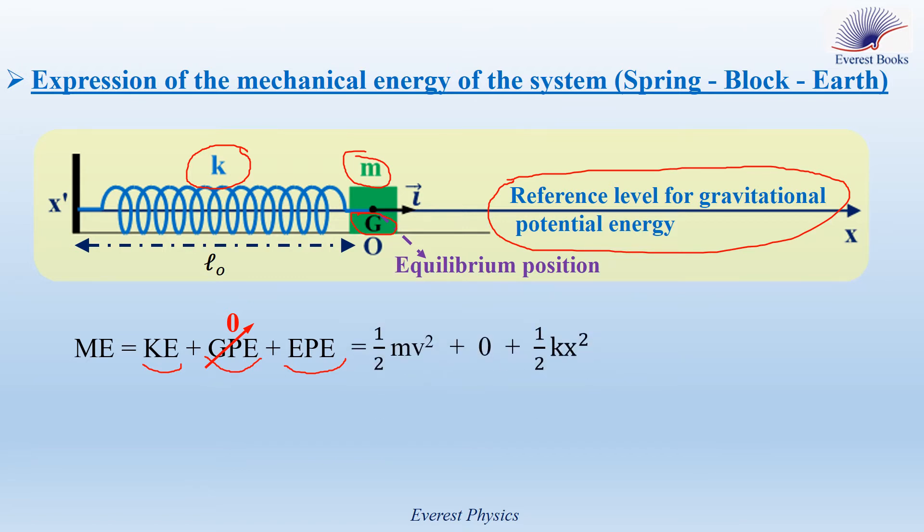So, KE is equal to one-half M v squared, and EPE is equal to one-half K x squared. Therefore, the expression of the mechanical energy of this system is equal to one-half M v squared plus one-half K x squared.